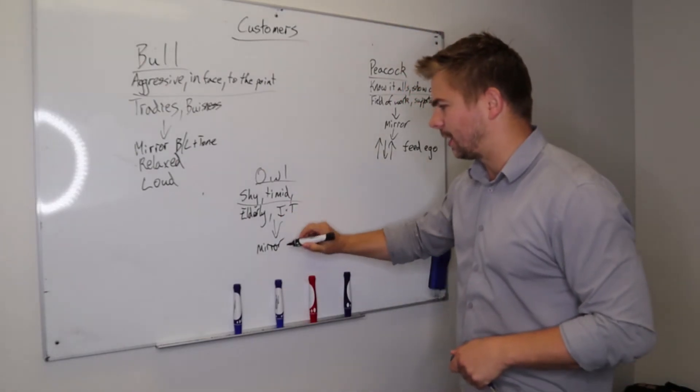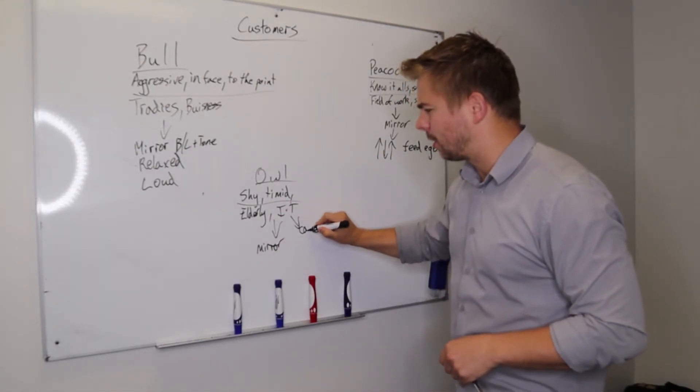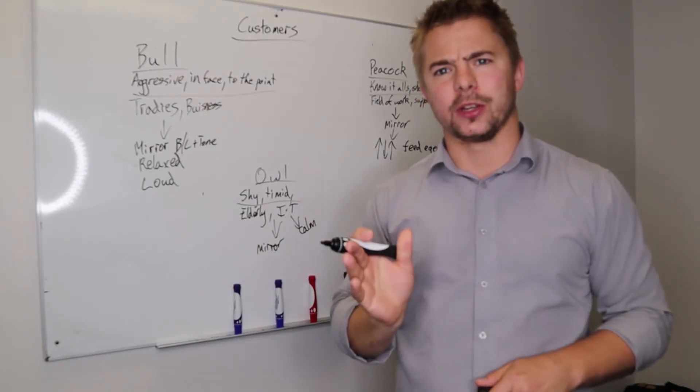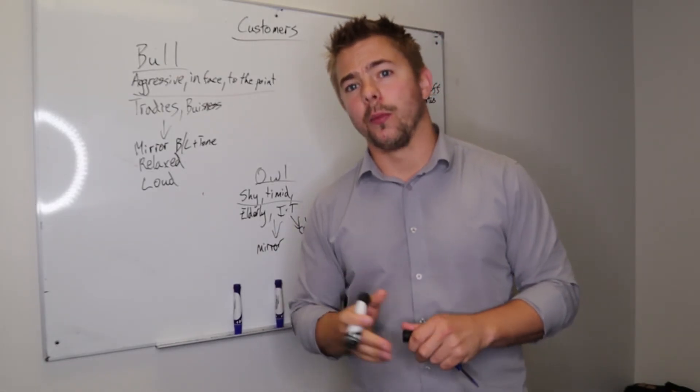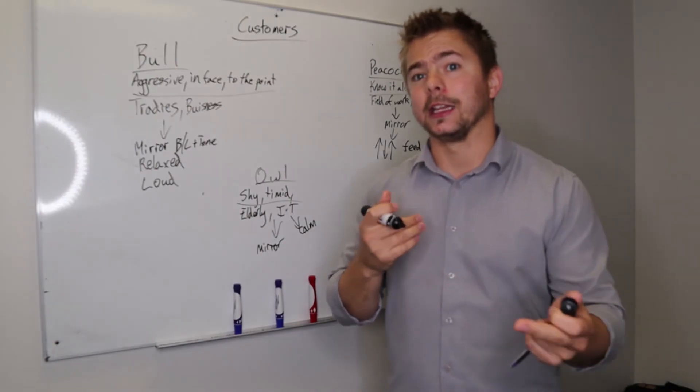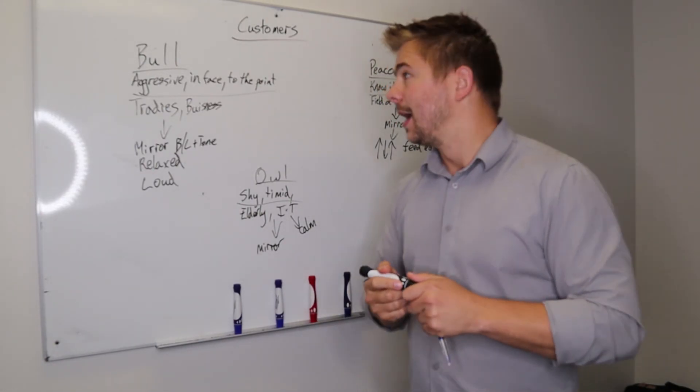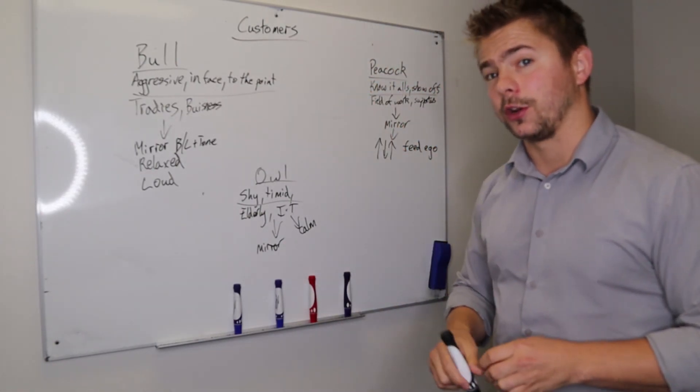And lastly, with owls, obviously you want to mirror them. What you want to be is nice and calm. You don't want to frighten them by jumping up and being too assumptive. Be nice and relaxed, nice and calm. Walk them through the process and take it nice and easy so you can see actually what they're actually helping out with. And that's adapting relating to three different types of customers.